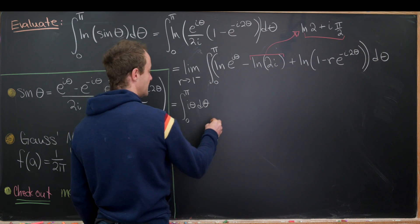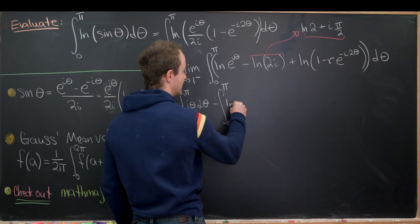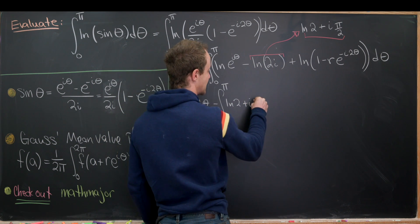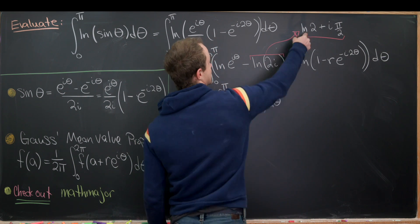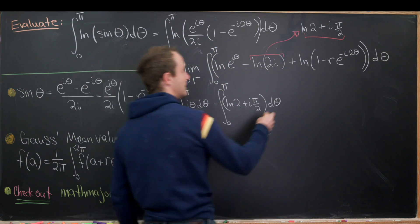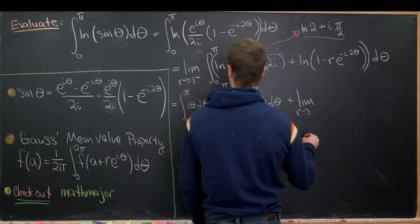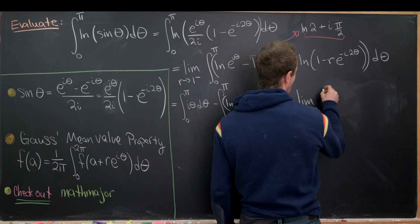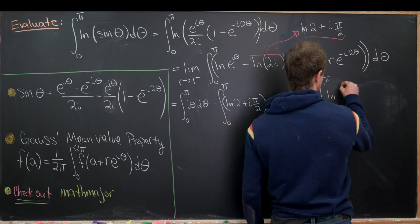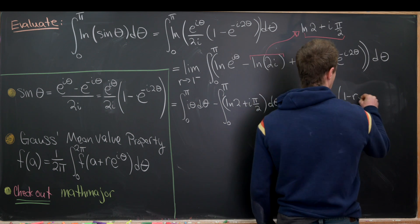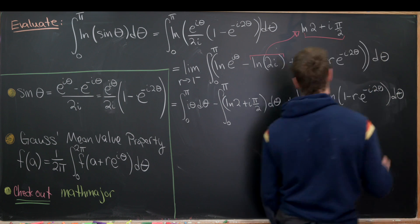So that's from this guy right here. And then minus the integral from 0 to pi of the natural log of 2 plus i times pi over 2 d theta. So that's from this stuff right here. And then finally, plus the limit as r goes to 1 from below of the integral from 0 to pi of the natural log of 1 minus r e to the minus i 2 theta d theta.